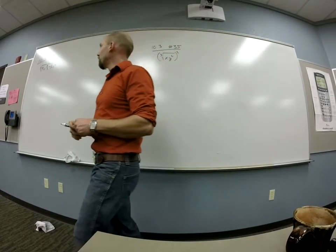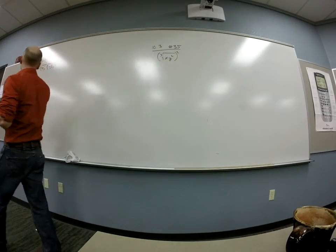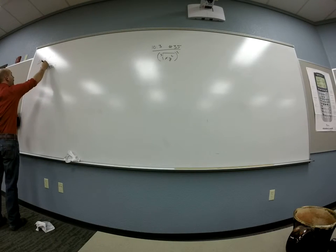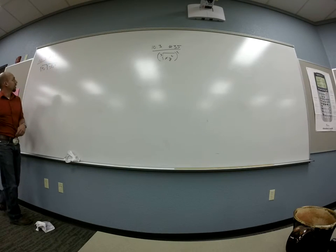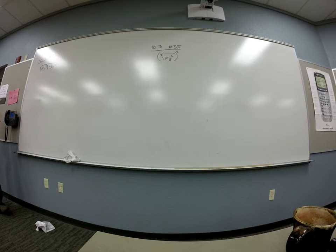So we want to do 10.3, number 31 first. All right, so I've got the cube root of 9v times the cube root of negative 3v squared, and I want to simplify.